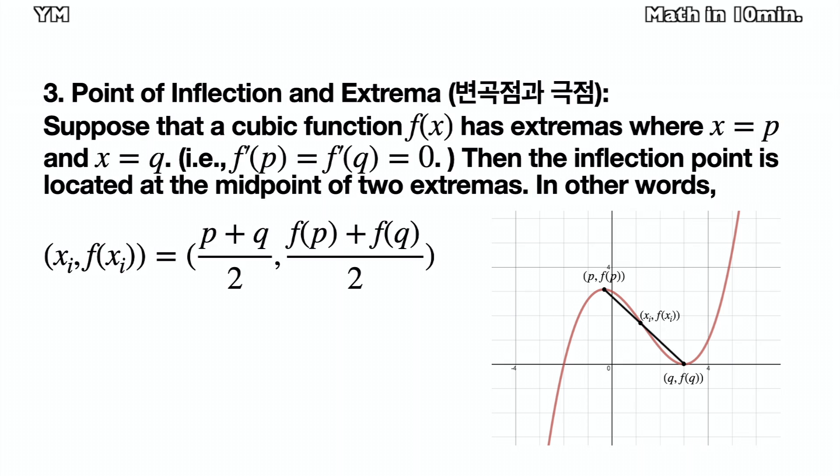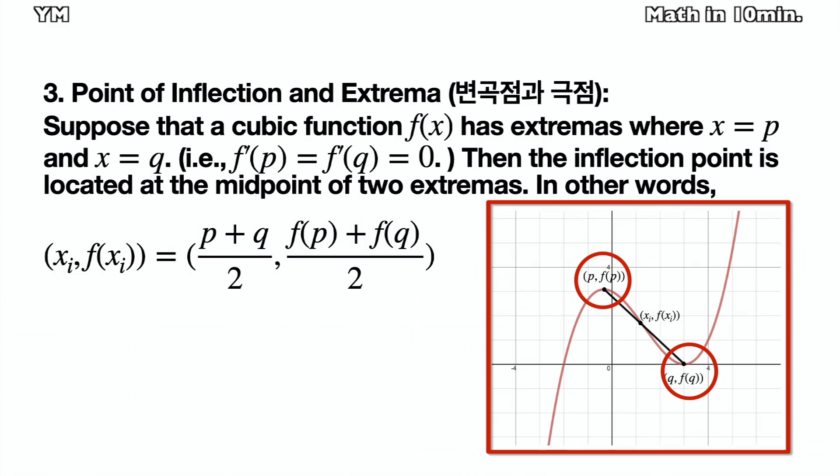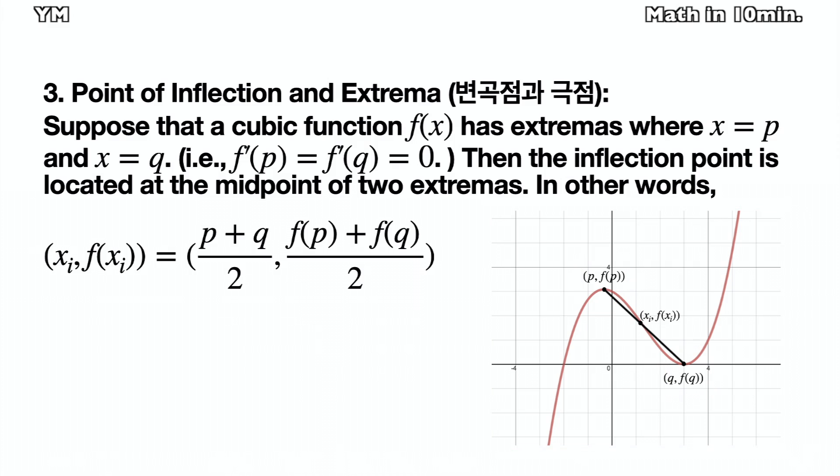If a cubic function f has two extremas, then they must be local maximum and local minimum points, isn't it? Like the picture on the right side. Then the inflection point must be located exactly at the middle of the two extremas. So if you know the two extremas, then you can find the inflection point very easily, like the equation below.